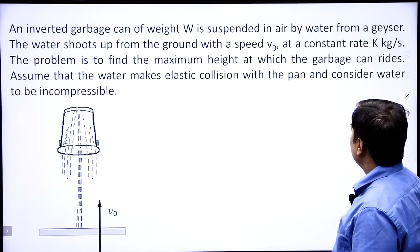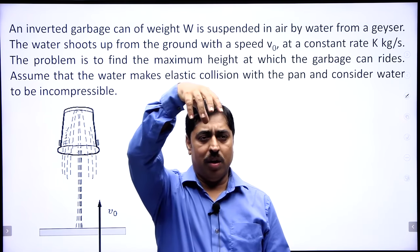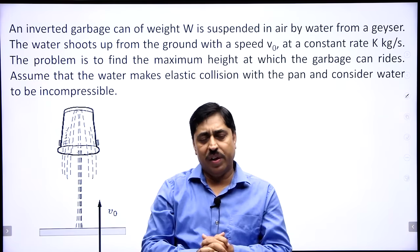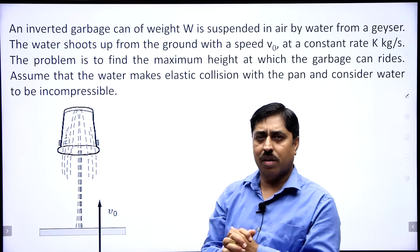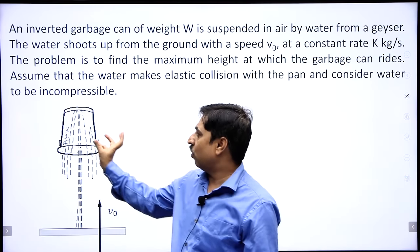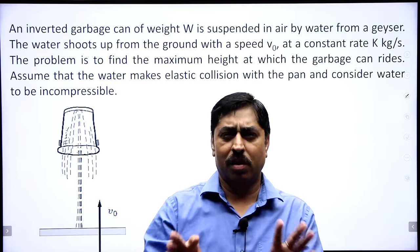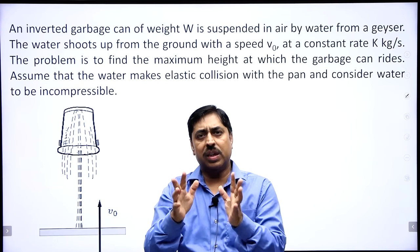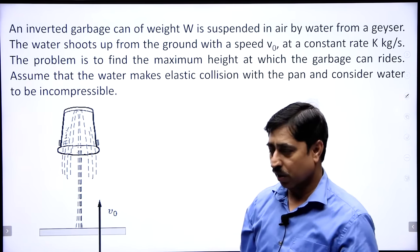Assume that water makes an elastic collision with the can and consider water to be incompressible. Water hits the can and rebounds after the elastic collision. To keep things simple, forget about the effect of water leaving the can — ignore variable mass effects. It is just that the water stream hits the can and the can stays in equilibrium.